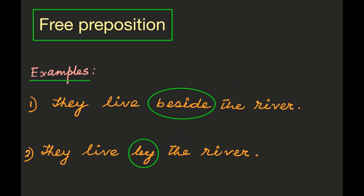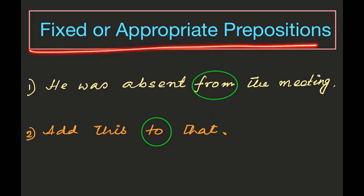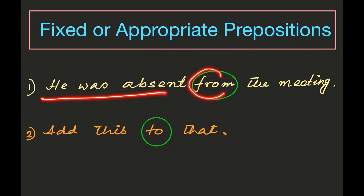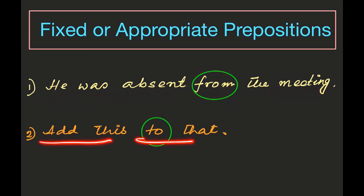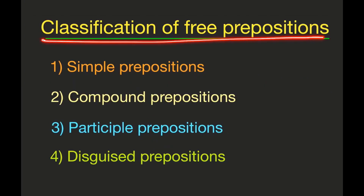Free prepositions are those which can be replaced by another preposition without changing the meaning. Now see fixed or appropriate prepositions. In some places in English, fixed prepositions are used. For example: 'He was absent from the meeting' and 'Add this to that.' Here 'from' and 'to' are fixed prepositions — you cannot change them without changing the meaning. So you must learn which prepositions are free and which are fixed or appropriate.